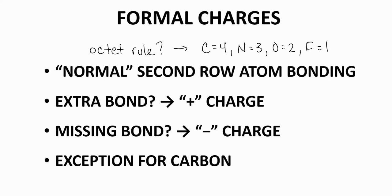If the atom has an extra bond above this normal value, then it will have a positive formal charge. We show positive charges with a plus sign in a circle next to the atom. If the atom has one too few bonds, it will have a negative formal charge. We show negative formal charges with a minus sign in a circle next to the atom. If an atom does not have a charge, we normally do not put any label next to the atom. When in doubt, always follow the style that your instructor uses.